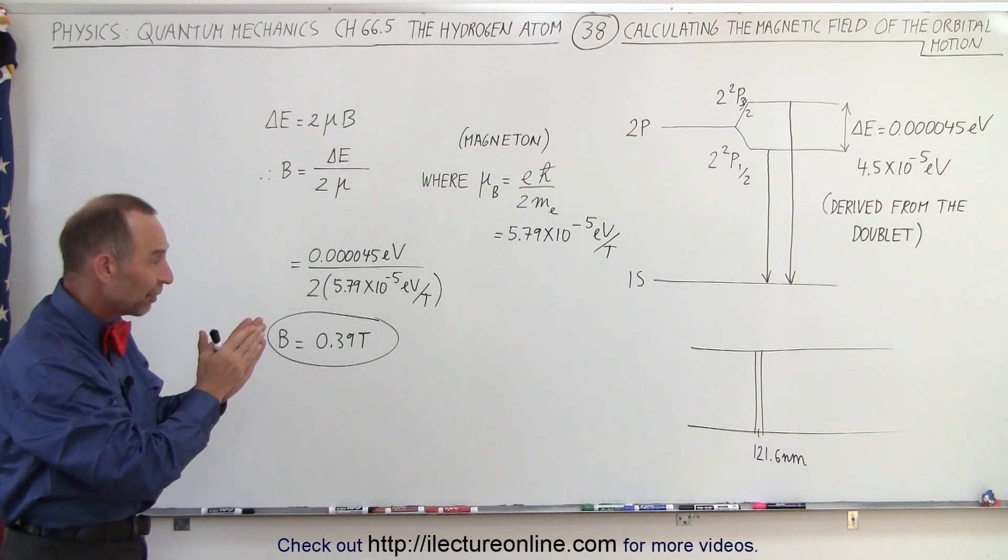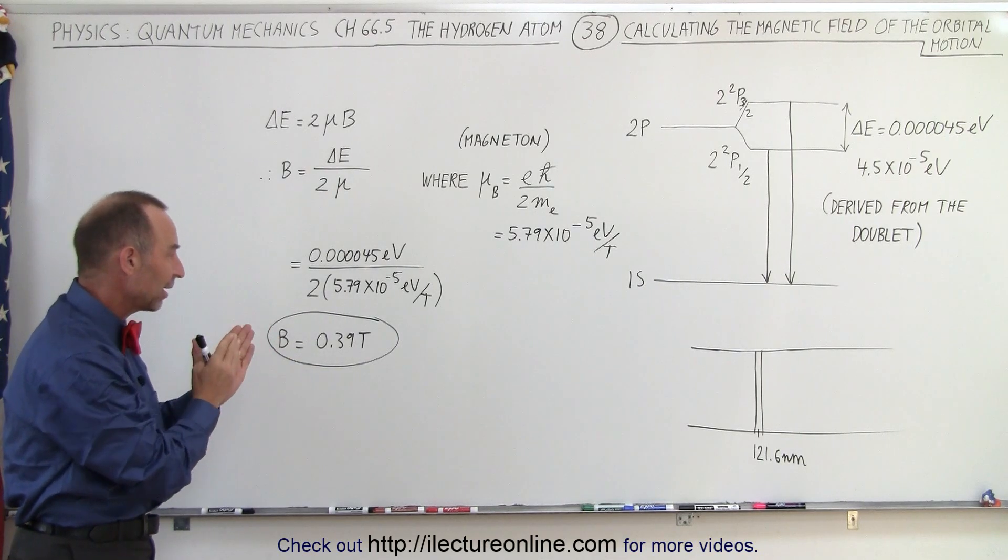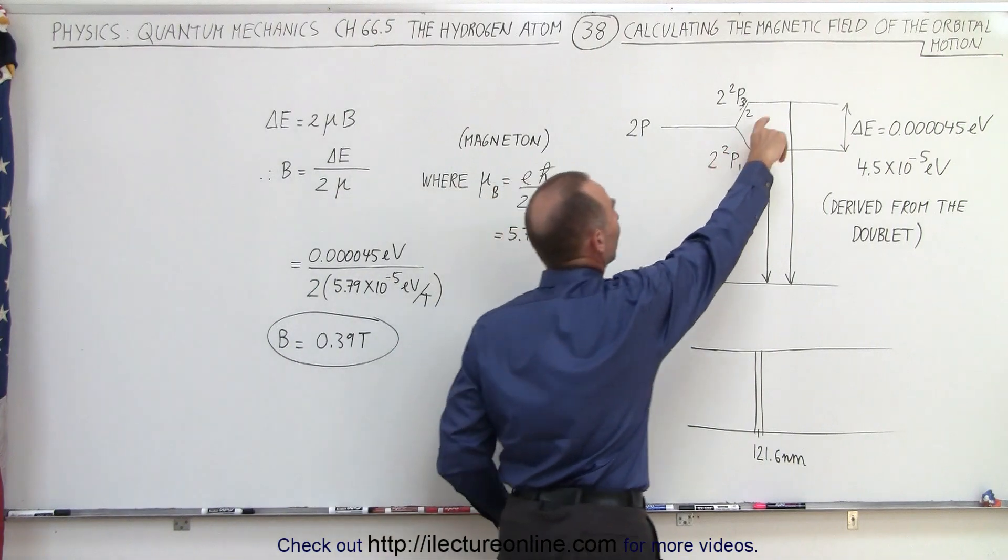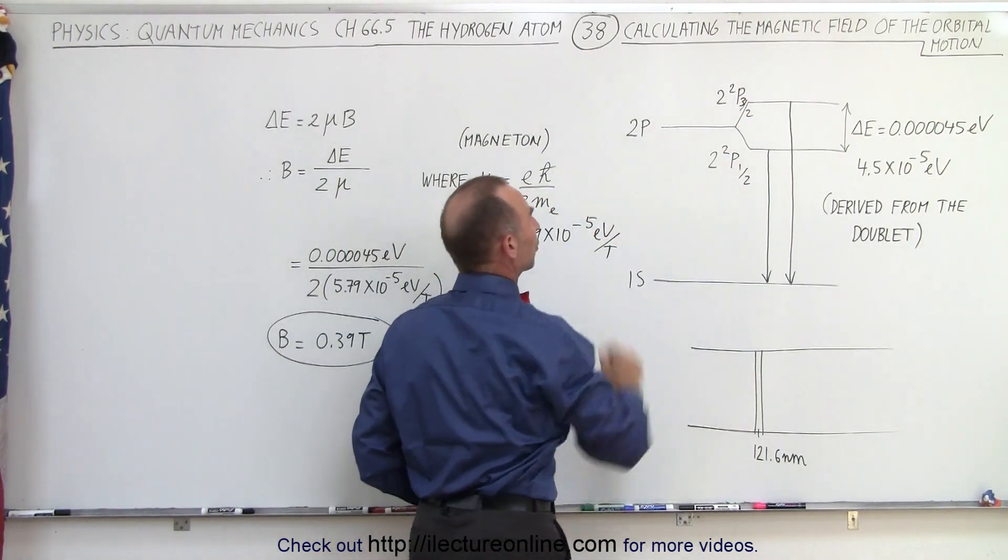And because of that we have a very strong interaction between the spin direction and the magnetic field caused by the orbital motion, which then is enough to be able to separate the energy levels between the electron jumps in the 2p orbital.